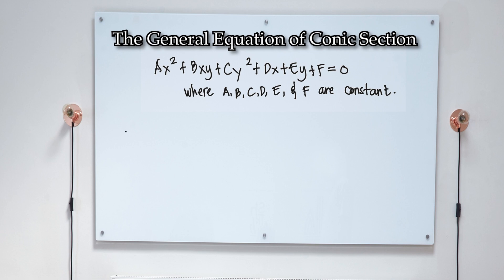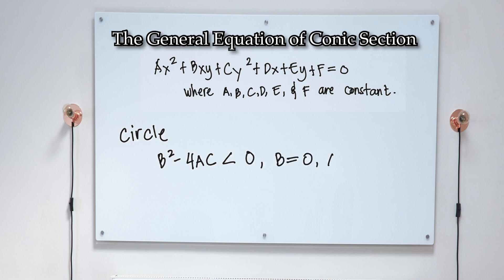From the general equation of any conic section, we can say that it is a circle if we meet the following conditions: the discriminant is less than 0, b equals 0, and a equals c. Thus, the general equation of a circle is x squared plus y squared plus dx plus ey plus f equals 0.